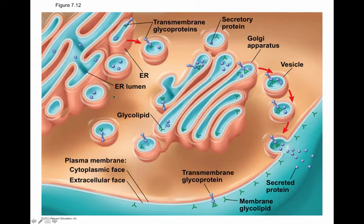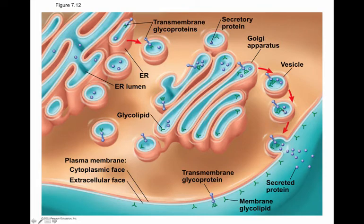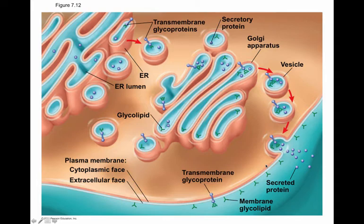Carbohydrates are added to proteins in the ER, and because of all of this, we end up with glycolipids and transmembrane glycoproteins, as well as our secretory proteins. When these vesicles fuse with the plasma membrane, the outside layer of the vesicle becomes continuous with the inside layer of the plasma membrane. In that way, molecules that originate on the inside face of the ER end up on the outside face of the plasma membrane.